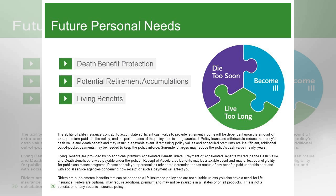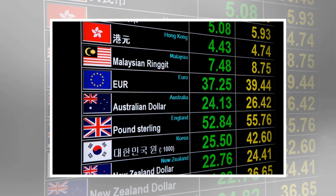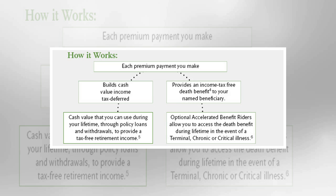A small but important caution: what makes this entire strategy possible is the way life insurance proceeds are taxed. Loans taken against the policy are not taxed, nor is the death benefit taxed when received by your beneficiaries. If you take out too much money from the policy and don't leave enough inside to pay the continuing cost of the policy, the policy will lapse — meaning the insurance company will cancel the policy. If that happens while you are still alive, the IRS wipes out all of the tax benefits, and all that money you took out becomes taxable. That is a tax bill you want to avoid at all costs.